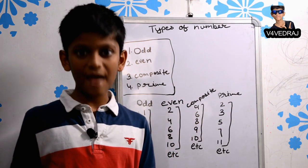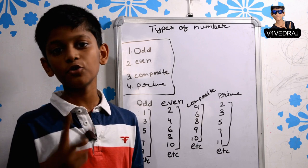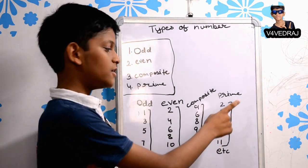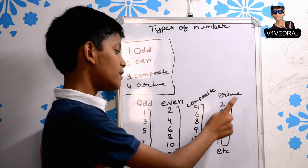Prime numbers which has only 2 factors is called prime number.